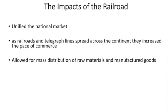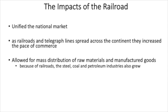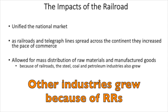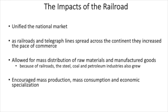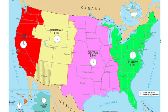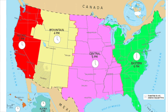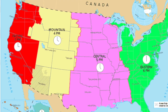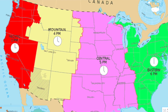Railroads allowed for mass distribution of raw materials and manufactured goods, which of course would help the economy grow. Because of railroads, the steel, coal, and petroleum industries also grew exponentially. Railroads encouraged mass production and mass consumption and economic specialization. Certain regions of the country started to specialize in certain areas. The U.S. was also divided into four time zones to help better coordinate the travel of people and goods, which first became a corporate law and eventually was approved by the federal government.